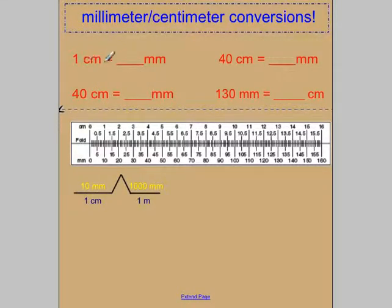Let's try the first one. One centimeter is equal to how many millimeters? Well, I have my bridge map down below, which reminds me that 1 centimeter is equal to 10 millimeters. I could also look on my centimeter-millimeter ruler and see that 1 centimeter is the same as 10 millimeters. Let's try another one. If I had 40 centimeters, how many millimeters would that be?